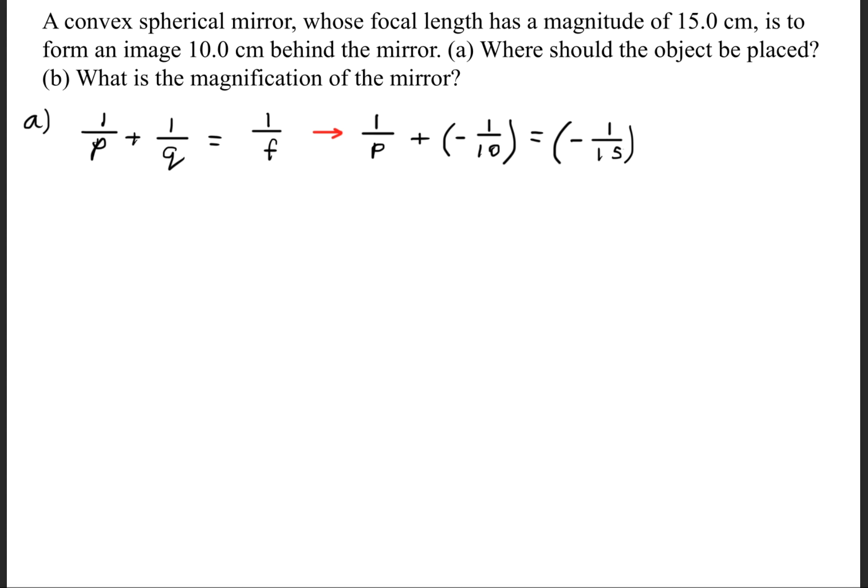Now one thing to keep in mind, because we're dealing with a convex spherical mirror, when we have the focal length, it's going to be a negative sign convention, so we have to place a negative in front of the value here.